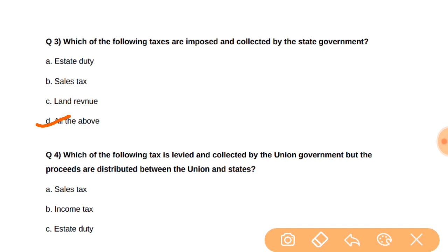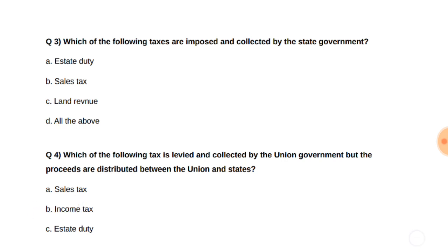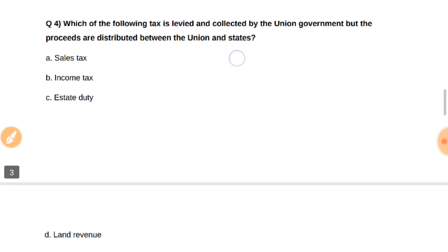Question number four: Which of the following taxes is levied and collected by the union government but the proceeds are distributed between the union and the state? The answer is B, that is income tax.